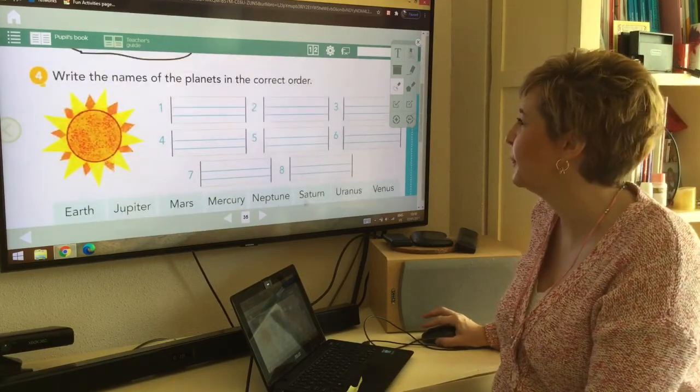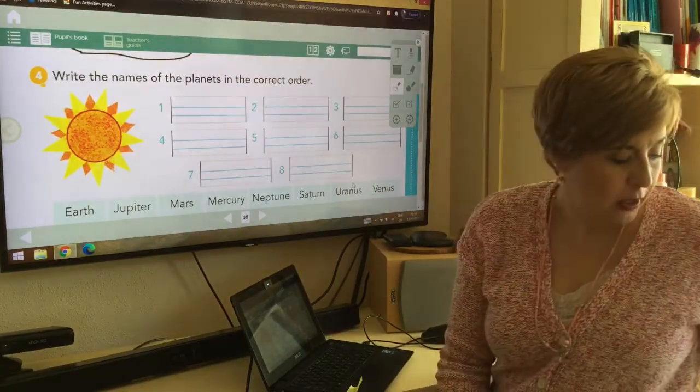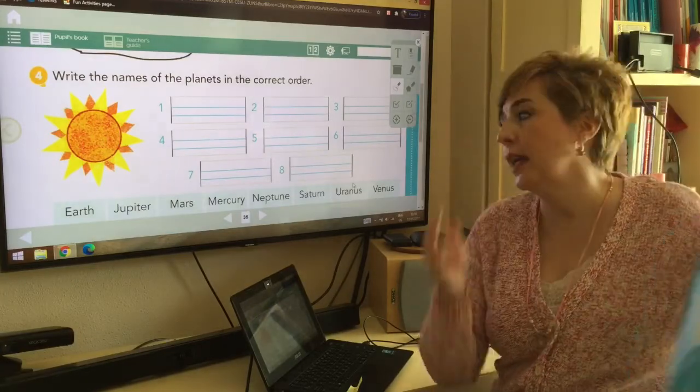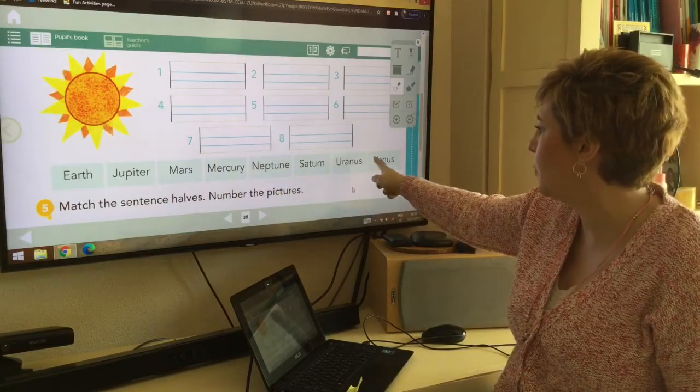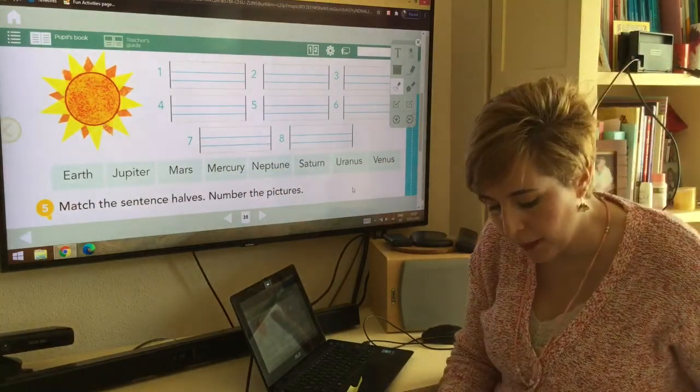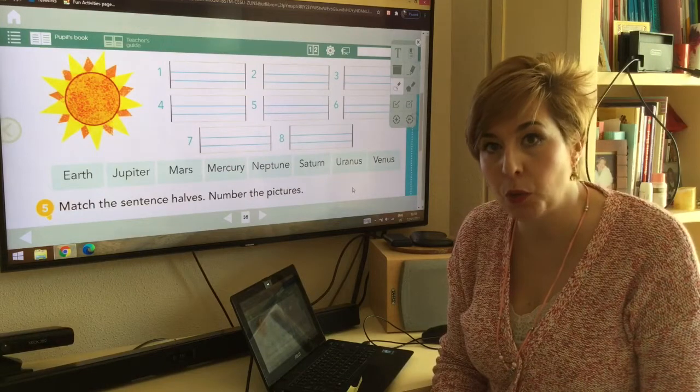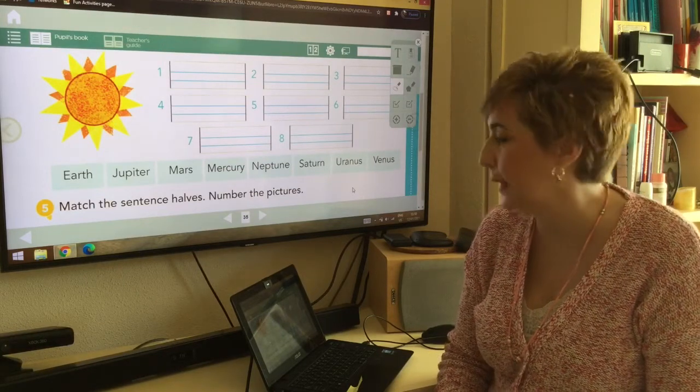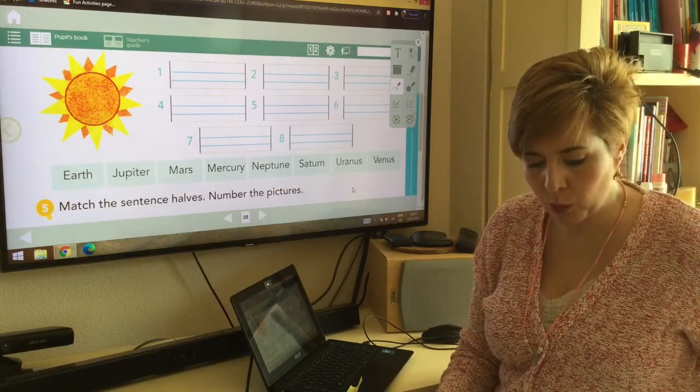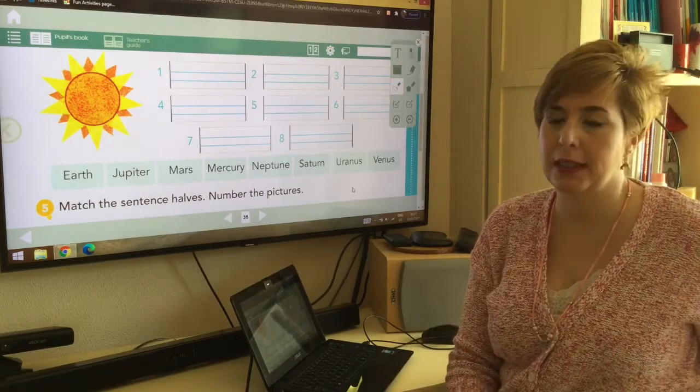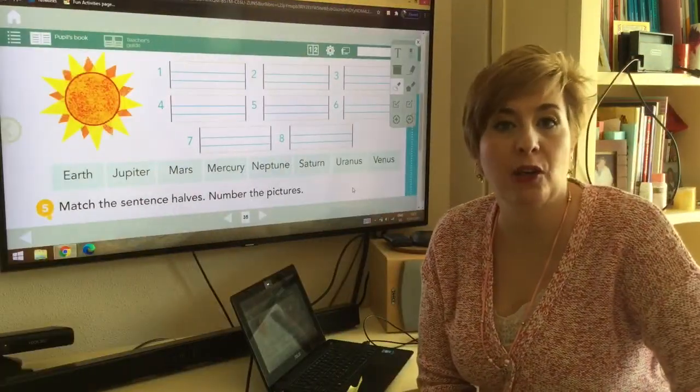Let's go to number four. Write the name of the planets in the correct order. What can you do? Either you remember, you have all of them here. Earth, Jupiter, Mars, Mercury, Neptune, Saturn, Uranus and Venus. Or you can go to page 23. At page 23 you have the order of the planets. Pause the video, do it and then we correct.